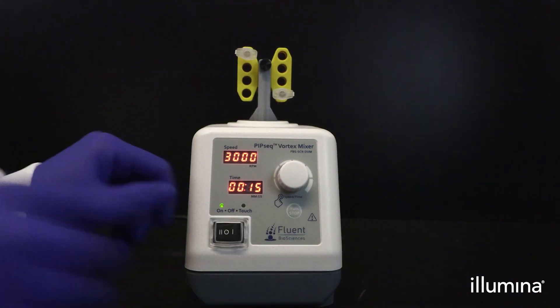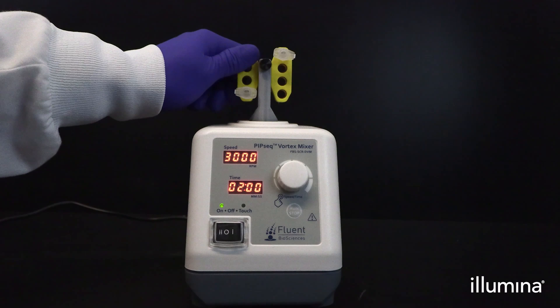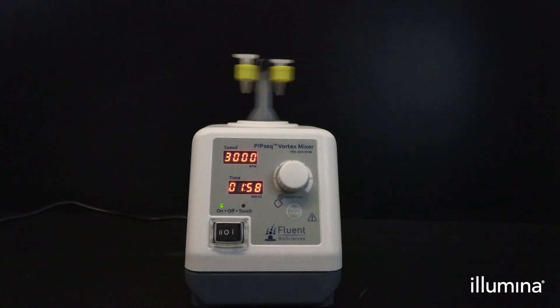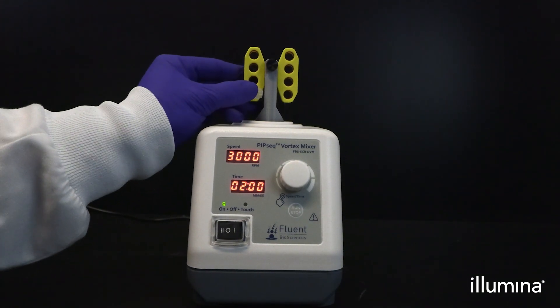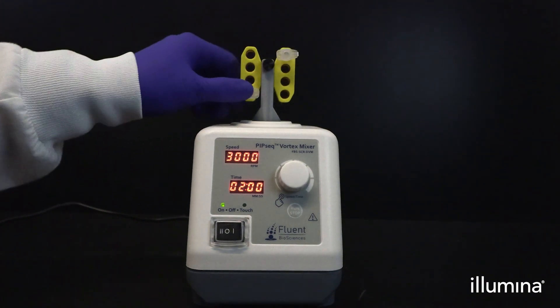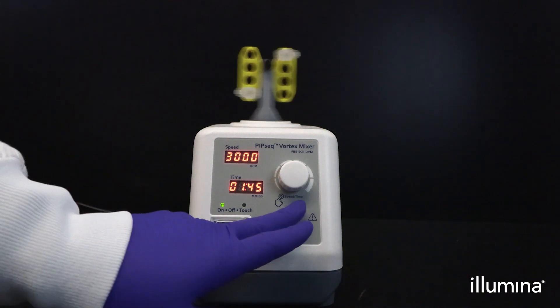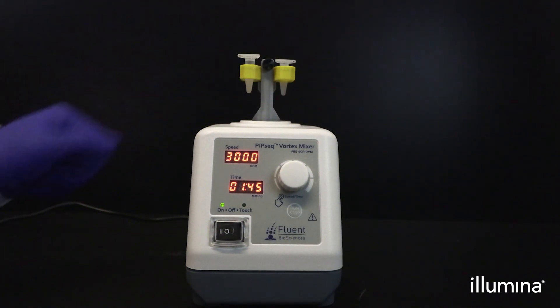Samples will be vortexed for 15 seconds in the horizontal configuration, followed by 2 minutes in the vertical configuration at 3000 RPM. For better vortexing efficiency, we recommend starting the timer at 2 minutes and stopping the vortex with 1 minute and 45 seconds remaining, or after 15 seconds of vortexing horizontally. Rotate the vortex head into vertical configuration and hit the start button to vortex vertically for 2 minutes.